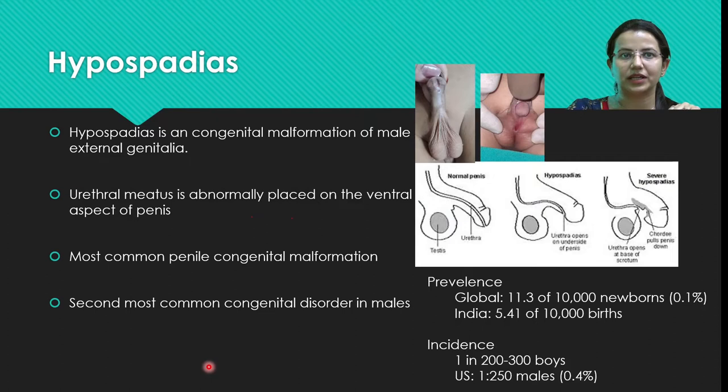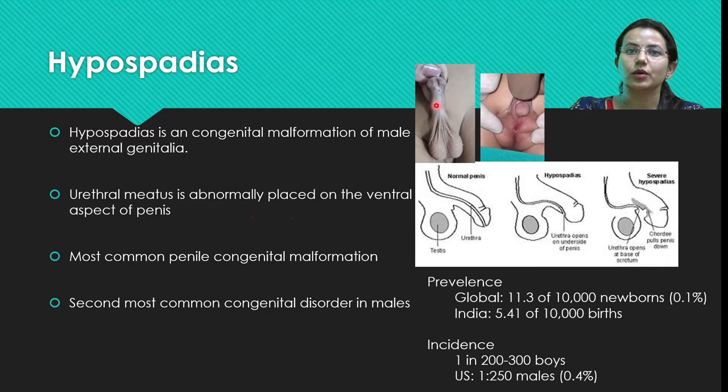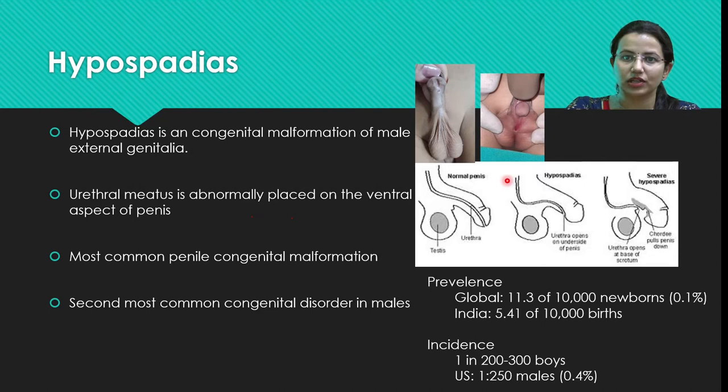Starting with hypospadias: the urethral meatus is placed on the ventral aspect of the penis. The urethral meatus can be present on the distal aspect, very close to the glans, while in very severe cases it can be placed between the scrotum or at the penoscrotal junction. So it could be a simple milder variant or a severe variant.